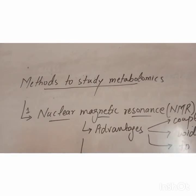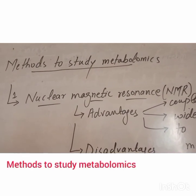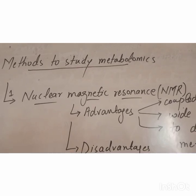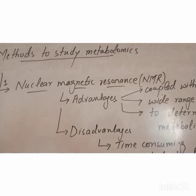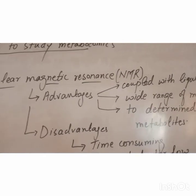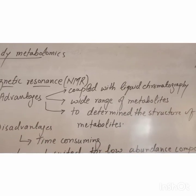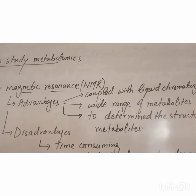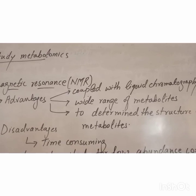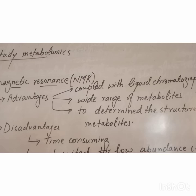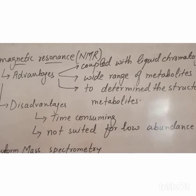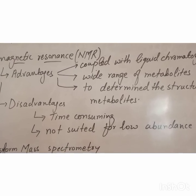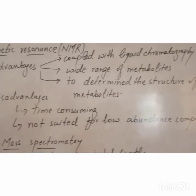Methods to study metabolomics are techniques that are used to study metabolomics. Number one: nuclear magnetic resonance or NMR. The advantages of NMR technique are that it is coupled with liquid chromatography, we can study a wide range of metabolites, and it is used to determine the structure of metabolites. The disadvantages are that NMR is time consuming for many metabolites, and it is not suited for low abundance compounds.